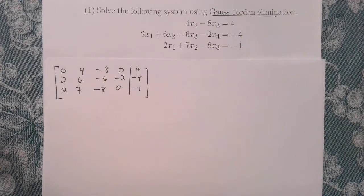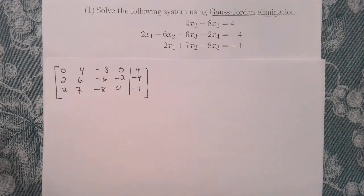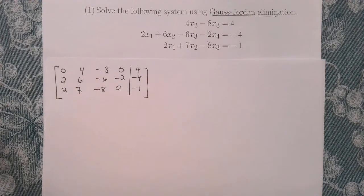Welcome back everybody. Let's do another linear algebra example. We want to solve the following system of linear equations using Gauss-Jordan elimination. We'll represent the system in an augmented matrix and then get it into reduced row echelon form using our elementary row operations.